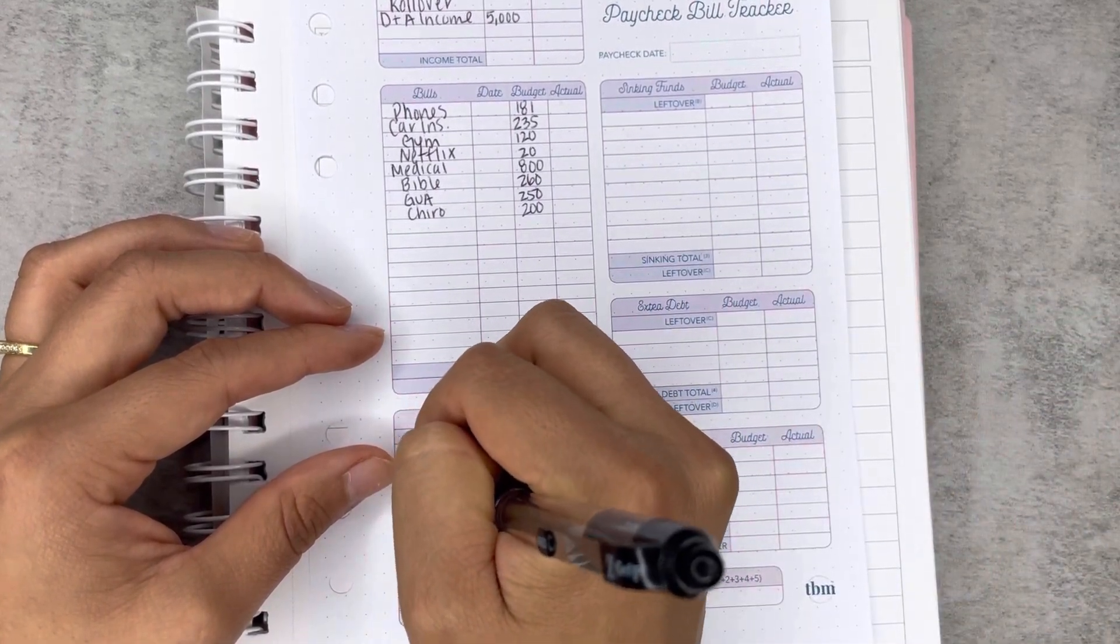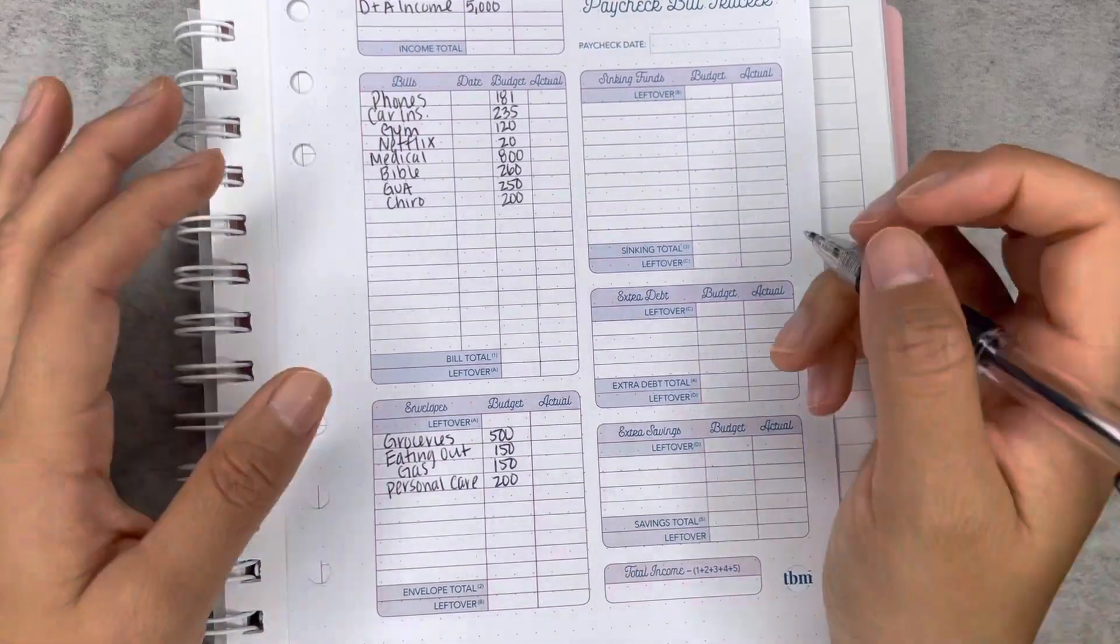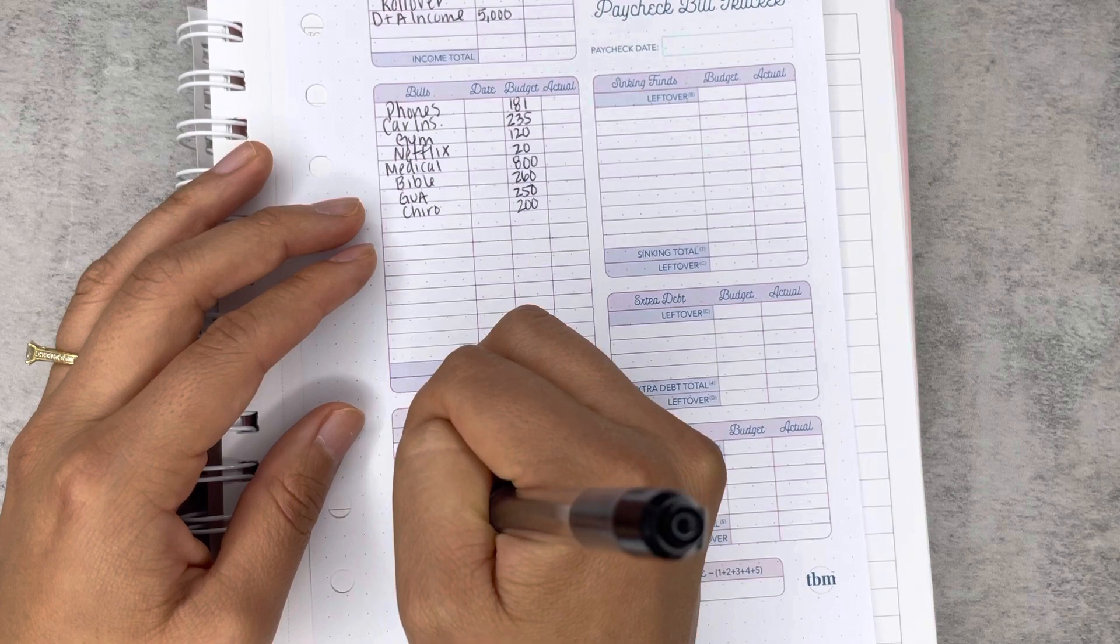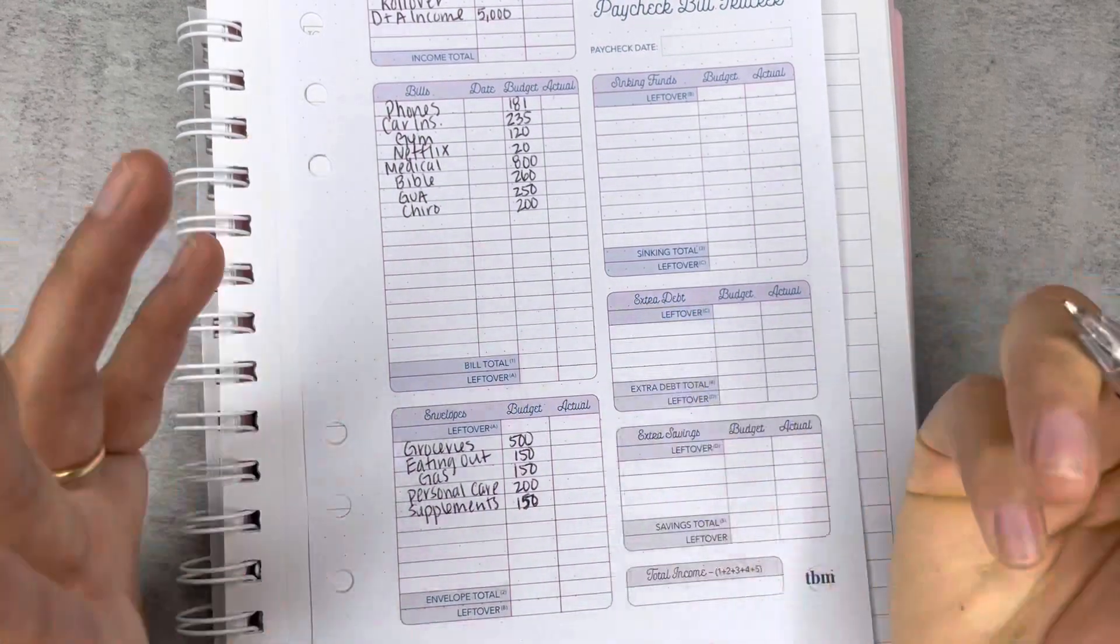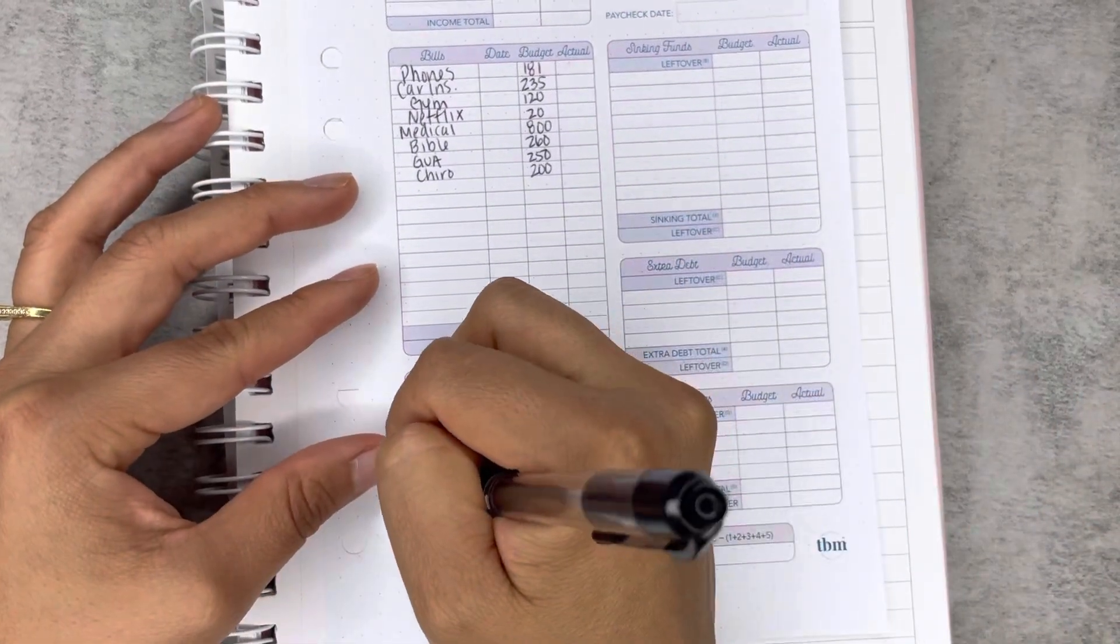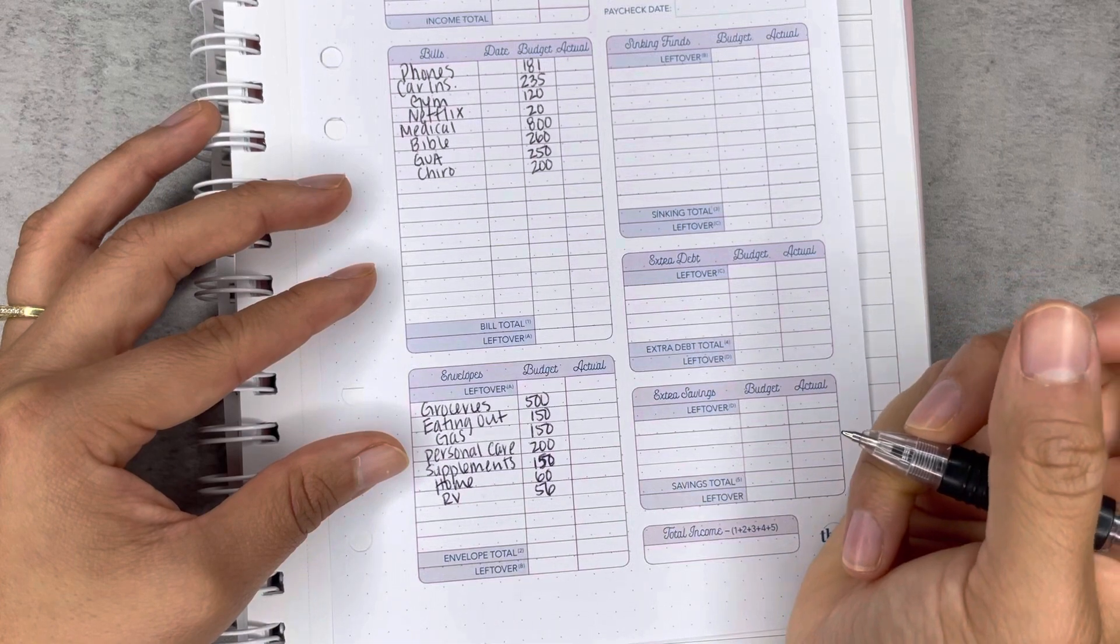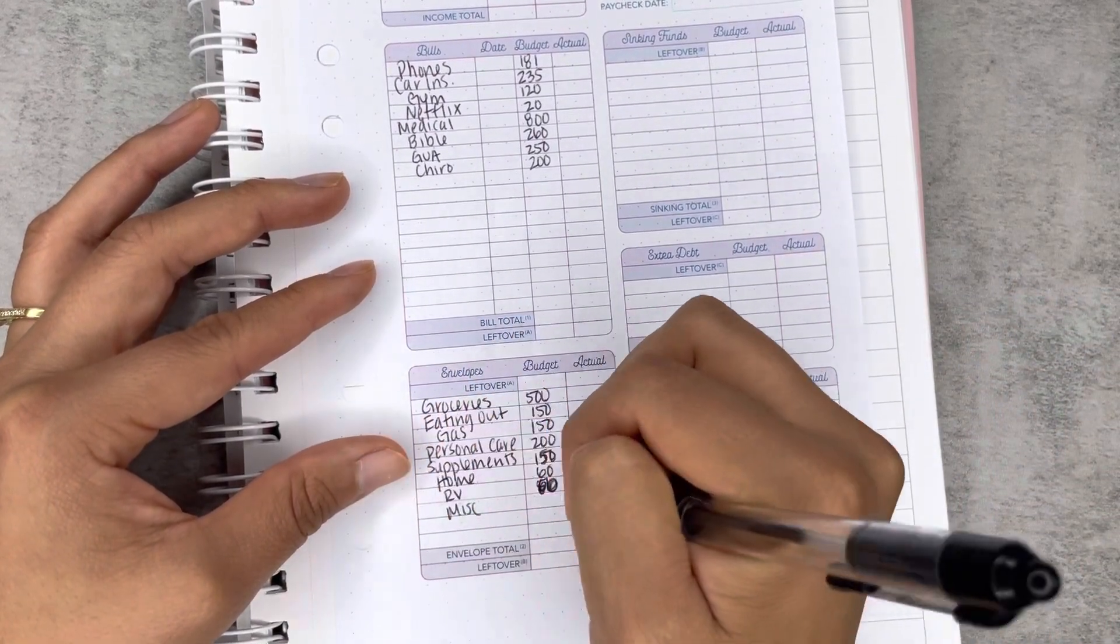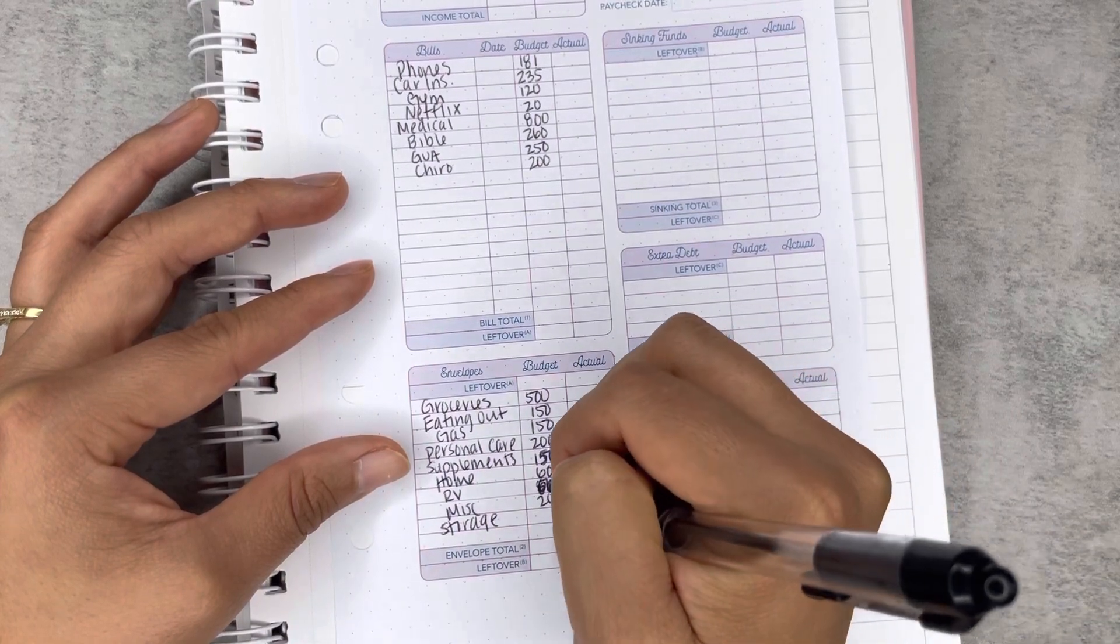Personal care. So this is going to be a little high this month because we did pay off that one major medical bill. So we do have a little bit more funds to use this month. I'm just going to play it safe and do $200. Because now that we're not so tight on our budget, we might want to stock up on some items that are not necessarily needs, more of wants. And same with supplements. And then home supplies, we're going to do $60. And then we have RV. I rounded that to $60. Miscellaneous, we're going to do $20. And then backup storage, meaning for our phones, we're going to do $10.